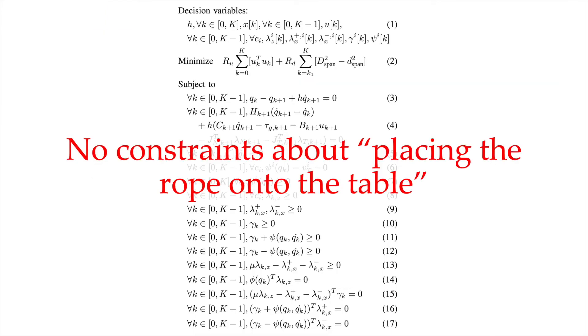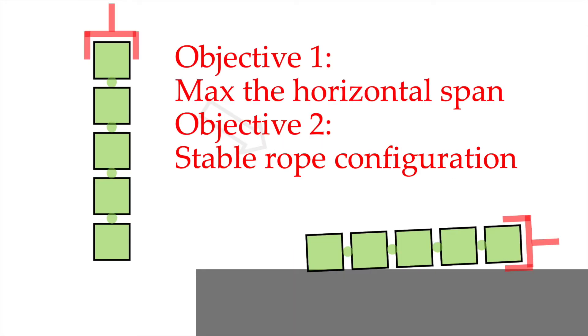As we have seen here, there is no constraint about placing the rope onto the table. We only specify the two objectives: maximize the horizontal span and the stable rope configuration. We want the optimization solver to figure out that the best way to accomplish this task is to actually place the rope on the table by leveraging contact, not avoiding contact.